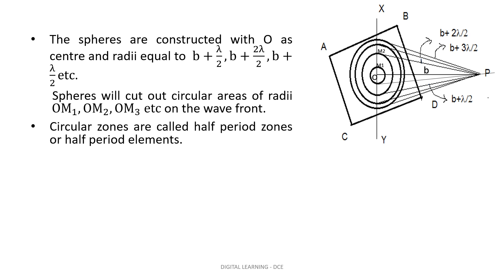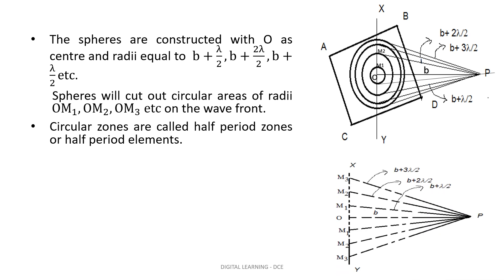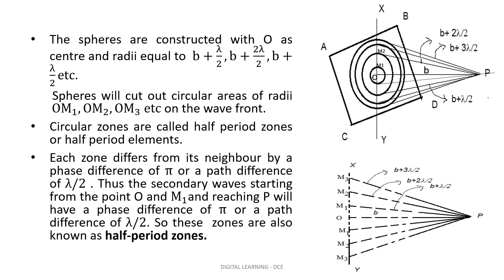These circular zones are called half period zones. Each zone differs from its neighboring zone by a path difference of λ/2. That is, light rays from O travel a distance B and reach P. The path difference of light from O to P and M1 to P is λ/2. Similarly, the ray of light from M1 to P and M2 to P has a path difference of λ/2, and so on. Since the path difference observed is λ/2, these zones are called half period zones.